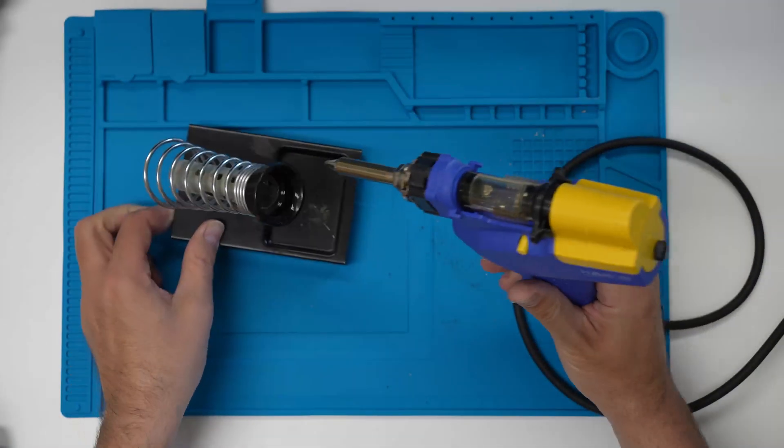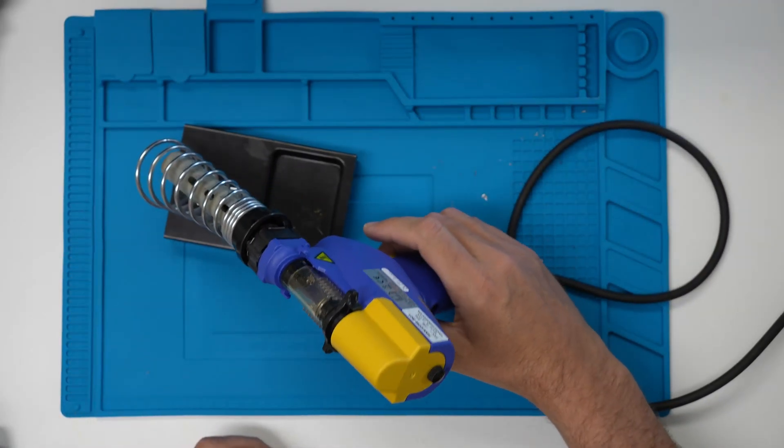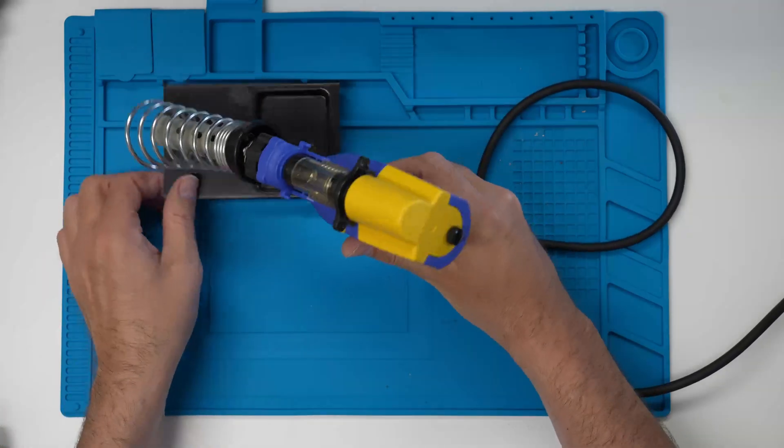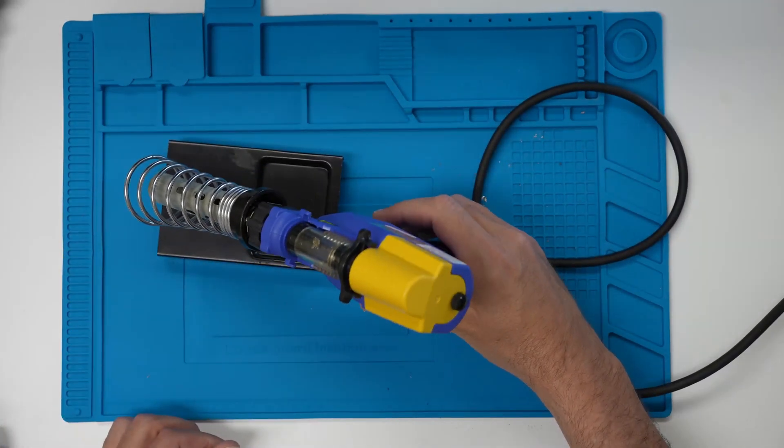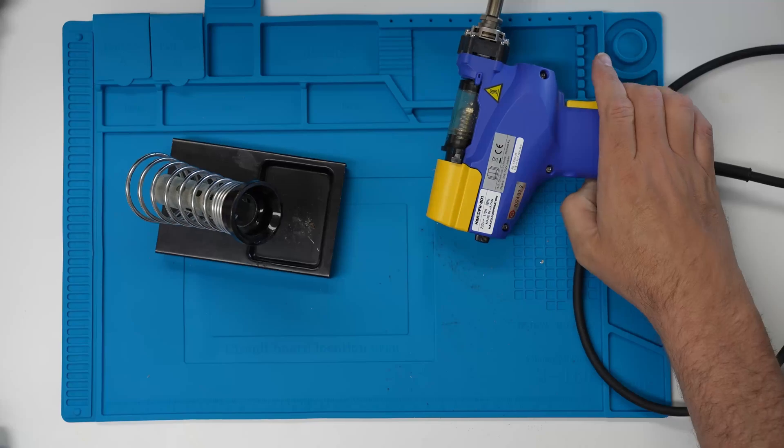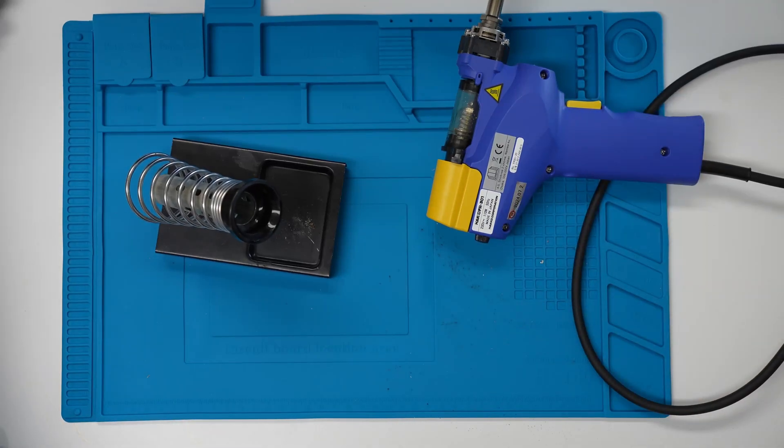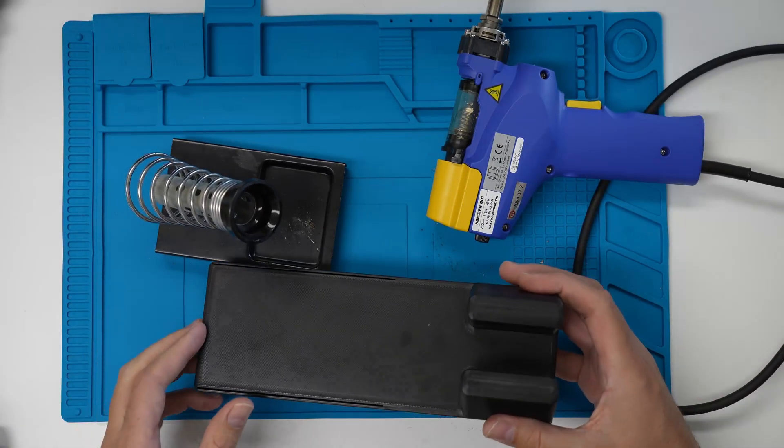You can get these kind of stands for like 5 or 10 euros. But it doesn't really work well with the Hakko because it keeps falling over like that, and it doesn't really fit well.